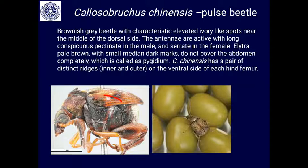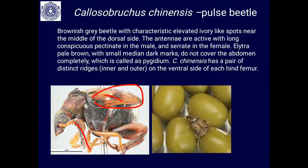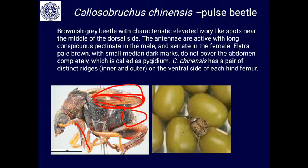Callosobruchus chinensis is characterized by elevated ivory-like spots on the elytra near the middle of the dorsal side. The antennae are prominent — pectinate in the male and serrated in the female. The elytra is pale brown in color with a small median dark mark, and does not cover the entire abdomen — covering up to three-fourths — while the rest of the exposed part is called the pygidium.